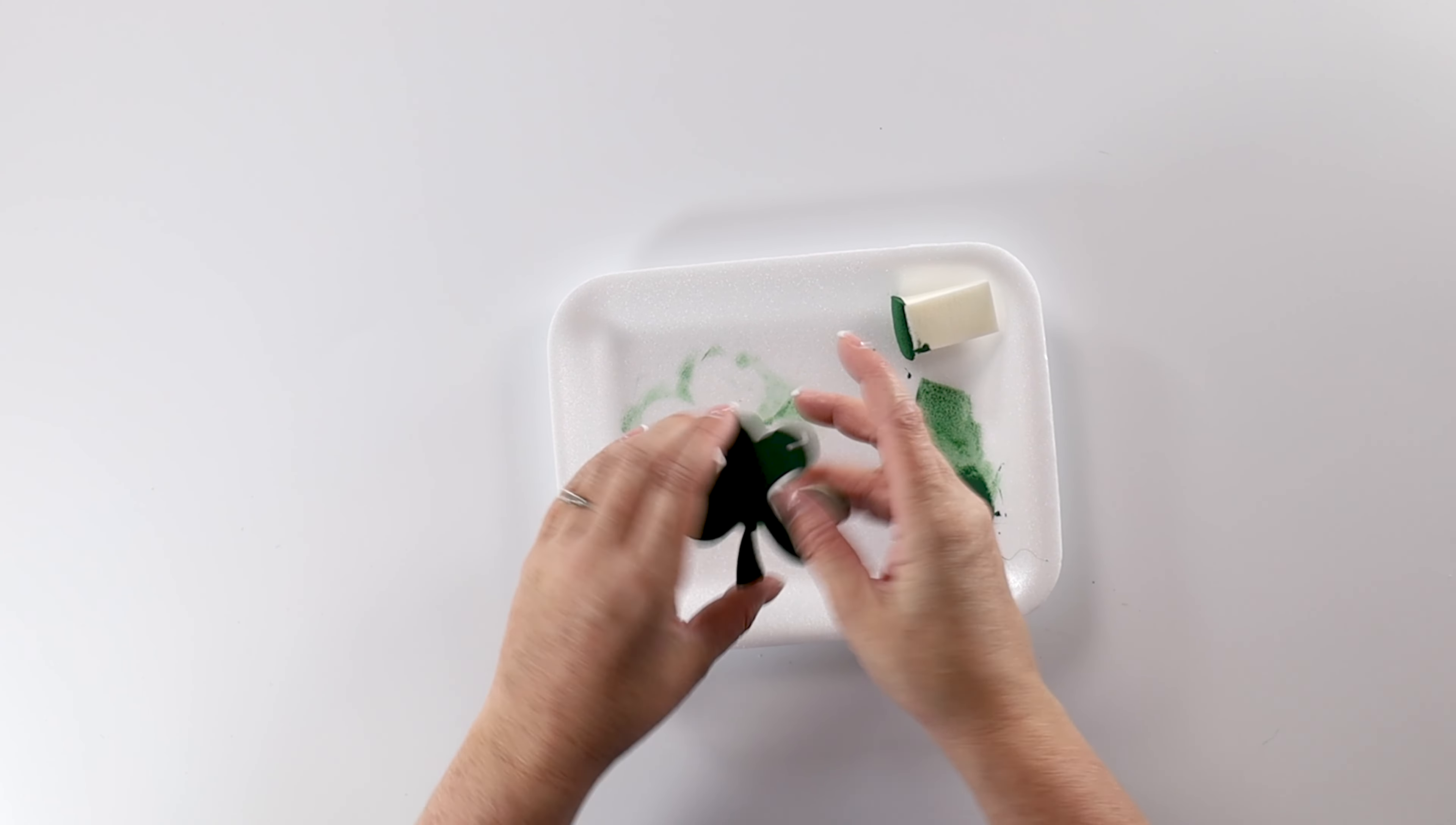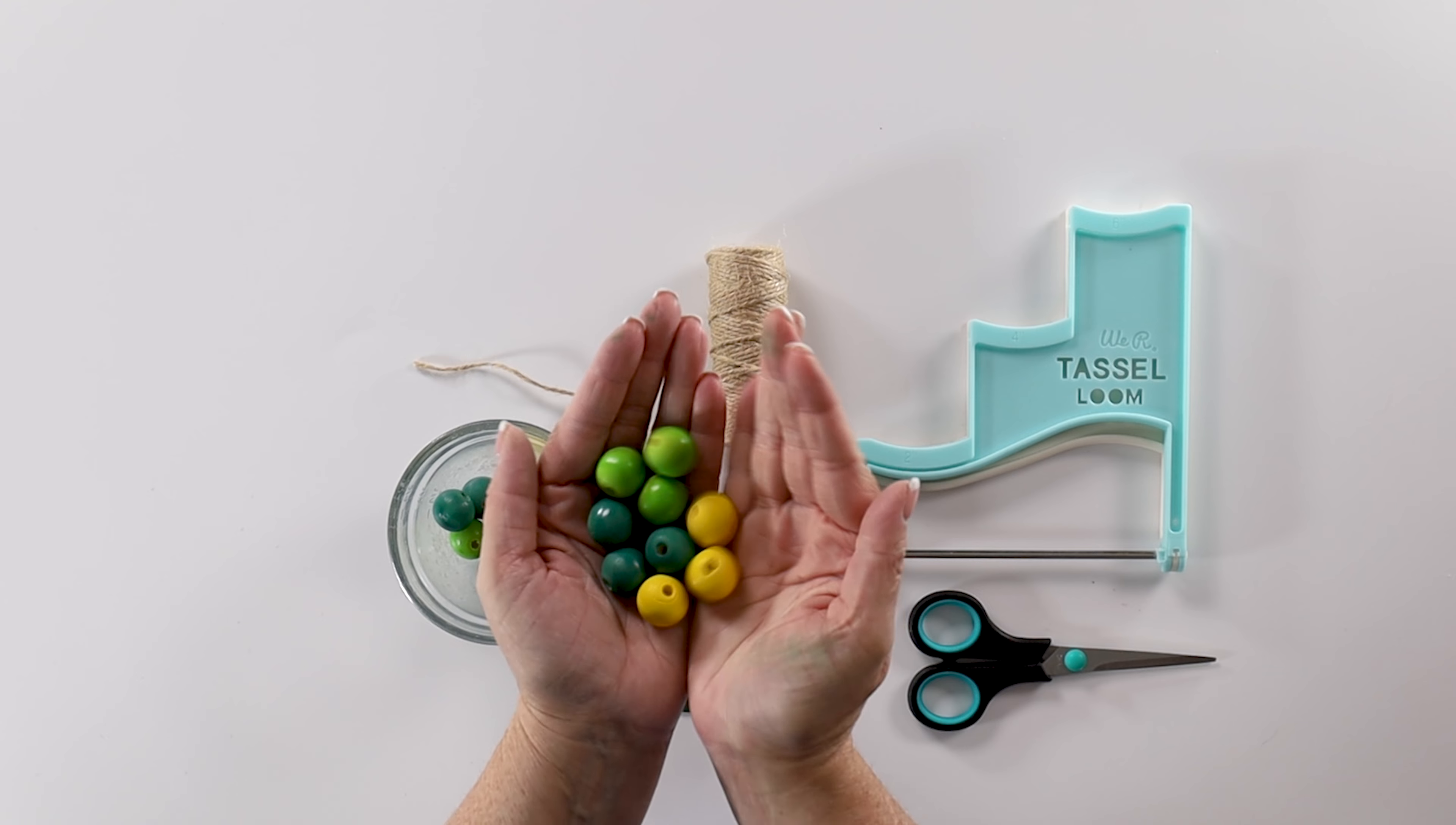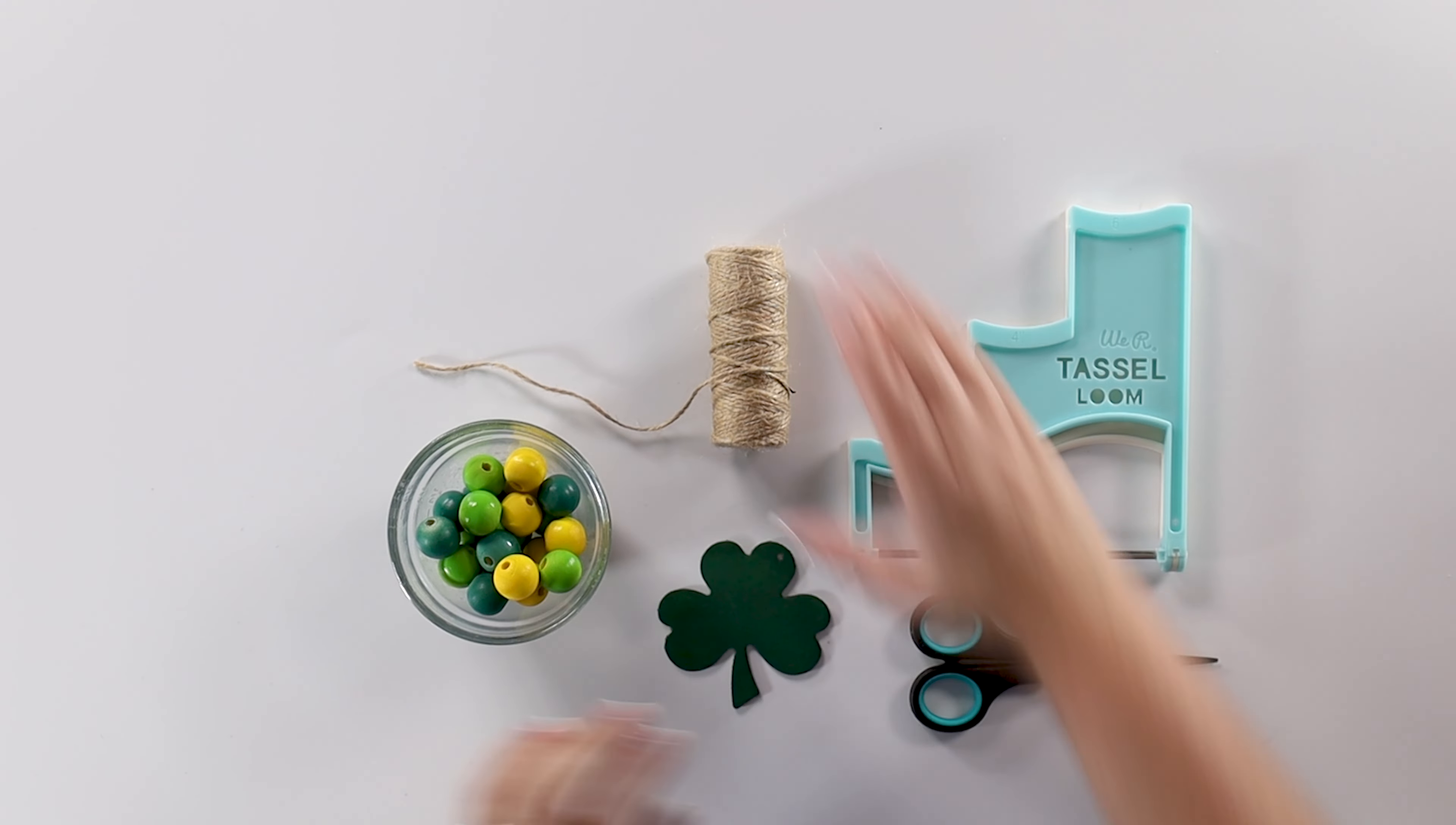So I'm going to let this first coat dry, and then I'll come back. I've got my two coats, and now I need to paint the back and the edges. I absolutely love how our painted beads came out. Aren't they so cute? I love those colors.